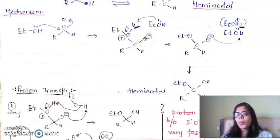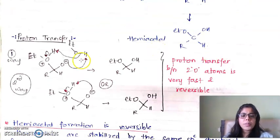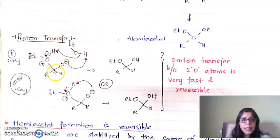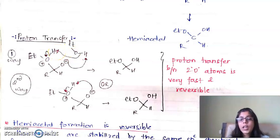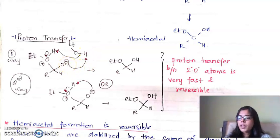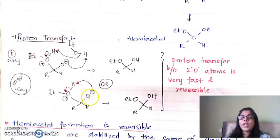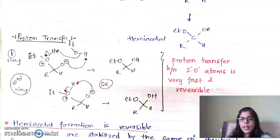The product is R-CH(OH)(OEt) — the hemiacetal. The H⁺ loss can happen by two ways. In the intermediate, where carbon–oxygen bond has formed and oxygen has a positive charge, one way is that solvent ethanol in solution abstracts the H⁺ — EtO⁻ acts as a base. Alternatively, there can be a direct transfer of H⁺ to the electron-rich O⁻. Both pathways are very fast and reversible.